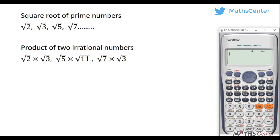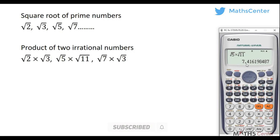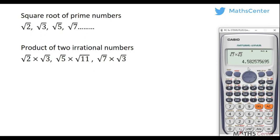Another example: square root of 5 times square root of 11 gives 7.416198487..., and square root of 7 times square root of 3 gives 4.582575695... In each case there is no clear pattern in the decimals and they continue to infinity, confirming these are irrational numbers.